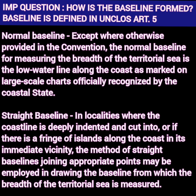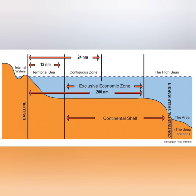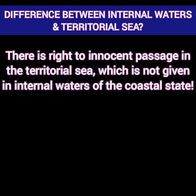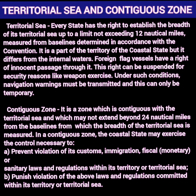With the baseline as the starting point, different areas are defined under this convention, along with the jurisdiction, sovereignty, and rights of a coastal state. The two areas closest to the baseline are the territorial sea and the contiguous zone. Territorial sea is the right of every state to establish their territory in the ocean, with a limit not to exceed 12 nautical miles measured from the baseline. The coastal state has complete jurisdiction over the territorial sea. The only difference from internal waters is that foreign flag vessels have a right of innocent passage through the territorial sea. The contiguous zone is named so because it shares the same boundary with the territorial sea and may not extend beyond 24 nautical miles from the baseline.